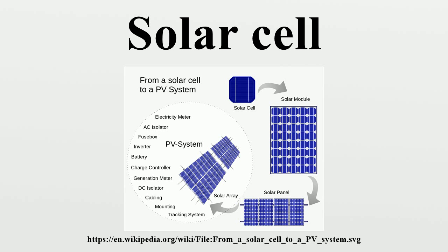Single PN junction crystalline silicon devices are now approaching the theoretical limiting power efficiency of 33.7%, noted as the Shockley-Queisser limit in 1961. In the extreme, with an infinite number of layers, the corresponding limit is 86% using concentrated sunlight. In December 2014, a solar cell achieved a new laboratory record with 46% efficiency in a French-German collaboration. In 2014, three companies broke the record of 25.6% for a silicon solar cell. Panasonic's was the most efficient. The company moved the front contacts to the rear of the panel, eliminating shaded areas.